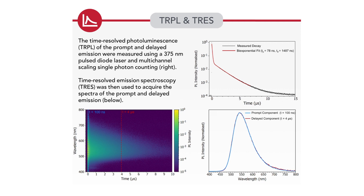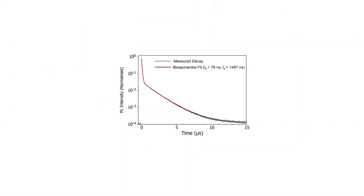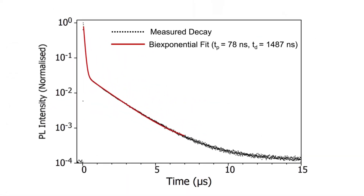Next, the time-resolved photoluminescence of CZDBA was studied using the pulse diode laser and MCS electronics in the FS5. Multi-channel scaling, or MCS, allows characterizing the excited state lifetime in the range of microseconds. The MCS decay was fitted in the Fluoracle software. The fit is markedly bimodal, with a prompt fluorescence component of 78 ns lifetime and a delayed fluorescence component with almost 1500 ns.